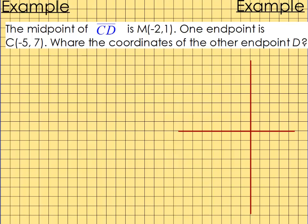Next example, pause the video. The midpoint of segment CD is negative 2, 1. One endpoint is at negative 5, 7. What are the coordinates of the other endpoint? I'm going to draw a graph first — you don't have to, you can use the midpoint formula directly, but I like doing a graph. So I'll plot the midpoint M at negative 2, 1, and place C at negative 5, 7. And then I've got to find point D, which is somewhere down here. I'm going to have to do some math.